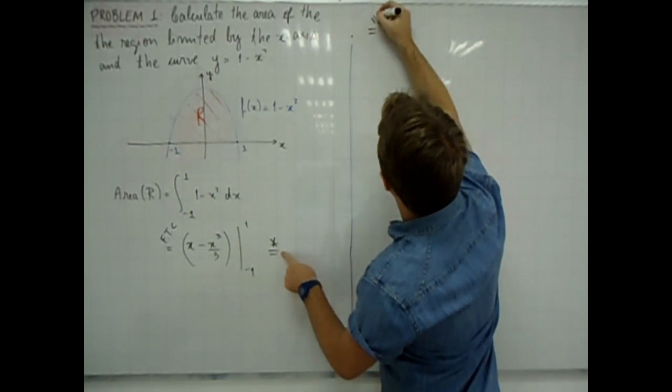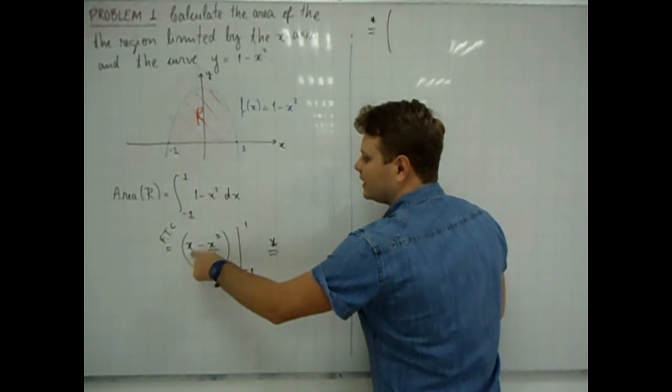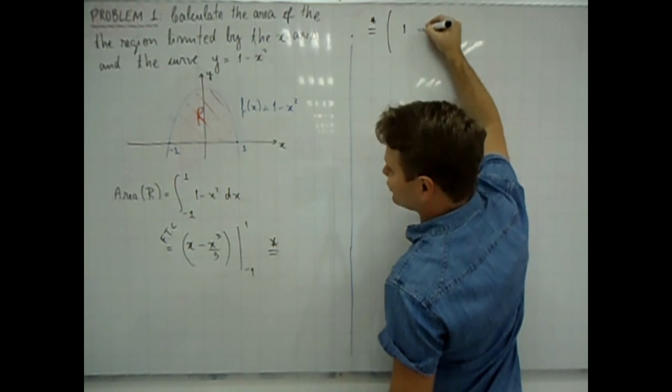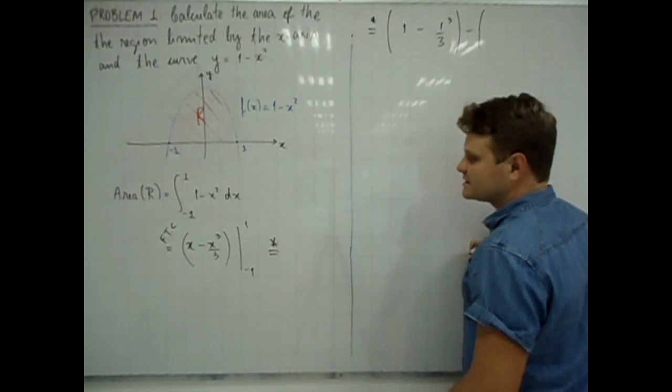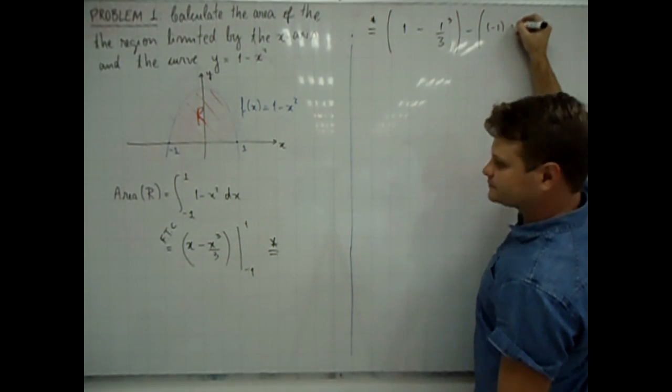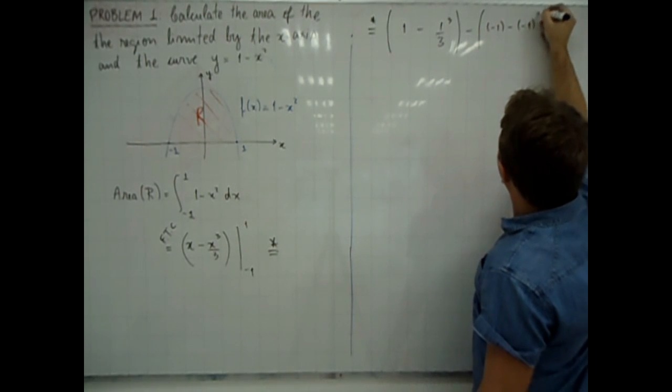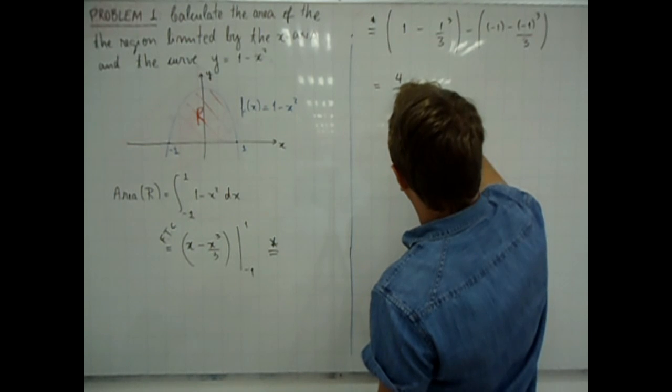We only need to calculate the value of this function at x equal to 1 minus this function calculated at x equal to minus 1, and this gives us 4 thirds.